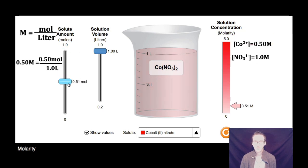Now we're going to change things up. We're going to put 0.5 moles in one liter of solution. We have made a more dilute solution than the original - we only have half a mole in our one liter of solution. So the concentration of cobalt(II) nitrate is 0.5 molar.